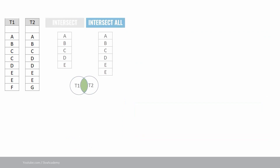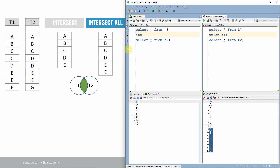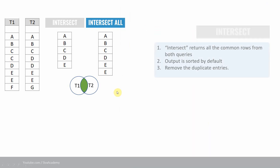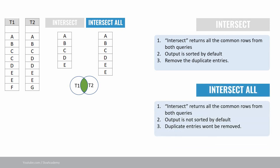Now let us look at intersect and intersect all. Running intersect returns all common data: A, B, C, D, E — E is not displayed twice because intersect removes duplicates. However, with intersect all, E is displayed two times because intersect all will not remove duplicate entries. The key learning: intersect returns common data, removes duplicates, and sorts records by default. Intersect all will not remove duplicates and will not sort the data.